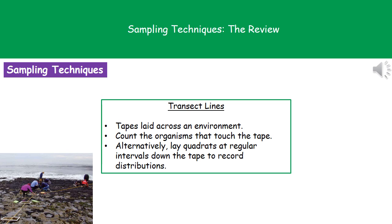The second technique is a transect line. We lay a tape across an environment — the best example is looking at organisms along a beach. You lay a tape from close to the sea all the way up the beach and count the organisms that touch the tape. Alternatively, you can place quadrats at regular intervals along the tape, say every two meters, and count all organisms within those quadrats to work out the distribution of organisms up the seashore.